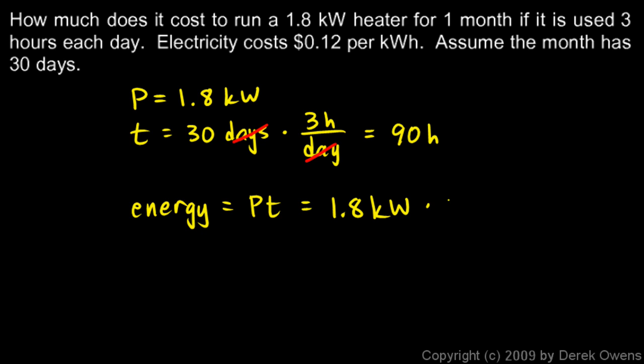Our power is 1.8 kilowatts. The time is 90 hours, so we just multiply 1.8 times 90, and we get 162. And you can see the units right there, kilowatt hours. So 162 kilowatt hours.